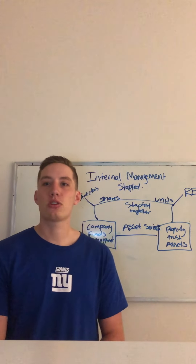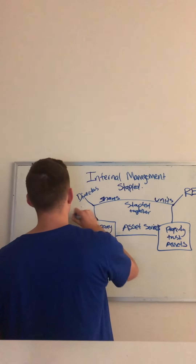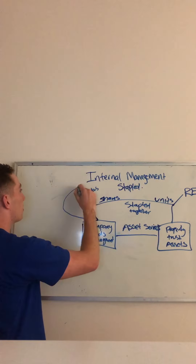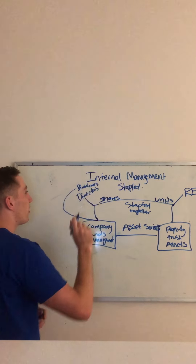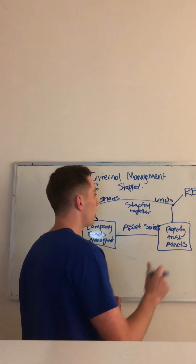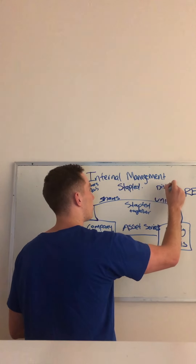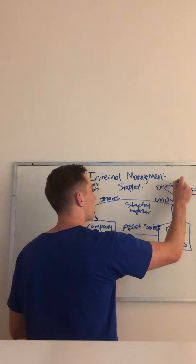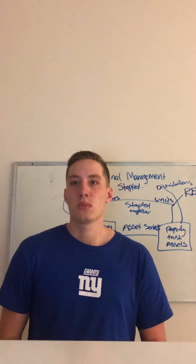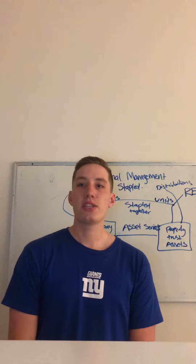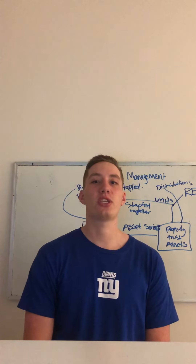Dividends and distributions are then derived from the stapled investment. Dividends are affiliated with the company's fund management, and distributions with the trust structure. Dividend imputation allows for dividends to occur, and when you have depreciation allowances, distributions are achieved.